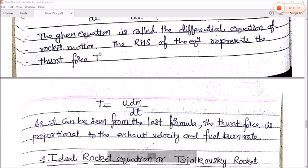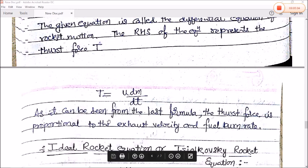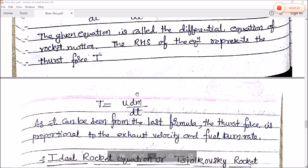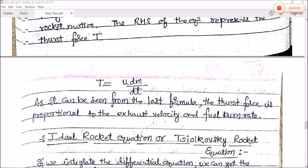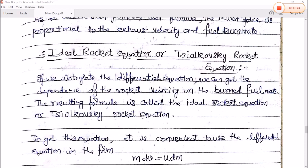So we can write the thrust as u*dm/dt. As it can be seen from the last formula, the thrust force is proportional to the exhaust velocity u.